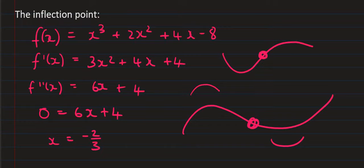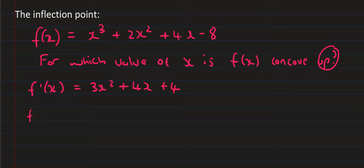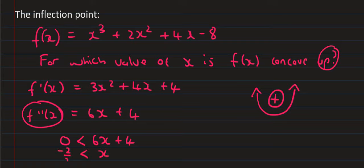Here's another example: for which value of x is f of x concave up? We know concave up means the second derivative is positive. We first find the first derivative, which is 3x squared plus 4x plus 4, and then the second derivative is 6x plus 4. Many students are tempted to set f of x equal to zero, but that's not what we're looking for. We want to know where the second derivative is positive, so we set up the inequality and find x is greater than negative 2 over 3.